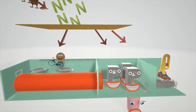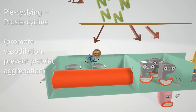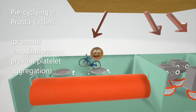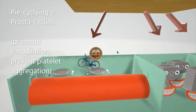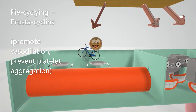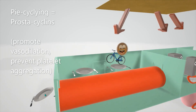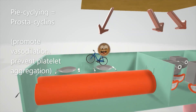Imagine the cyclic endoperoxides falling into three rooms. First, we have a cyclist — the 'pi cycling' — for prostacyclin. In this room, a pipe gets really big and red, helping us remember vasodilation. Plates in the room get separated and one gets flown out the window, representing decreased platelet aggregation. So prostacyclin leads to decreased platelet aggregation and vasodilation.